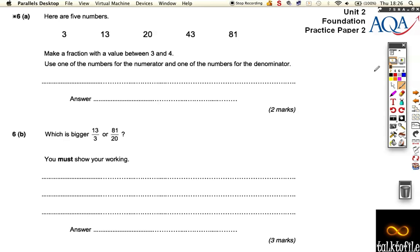Question six. There's five numbers here. We've got 3, 13, 20, 43, 81. Make a fraction with a value between 3 and 4.